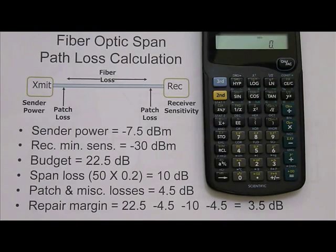Here is a sample path loss calculation using a fiber span. It is a simple calculation, but the mathematics can be a little confusing because of the negative values of our send power and receive sensitivity.